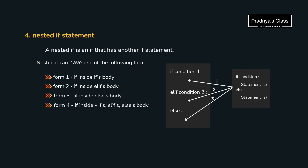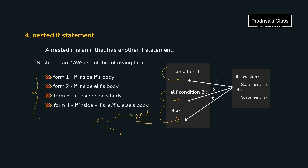The last form is nested if — when we include one if inside another if. We use this when, after checking the first condition, we need to check a second condition depending on the result of the first. Nesting can be inside the if part, elif part, or else part, giving four different forms of nested if. A real-life example: to cast a vote, first we check if you are Indian, and only if that condition is satisfied do we then check your age — if both conditions are met, you are eligible to vote.